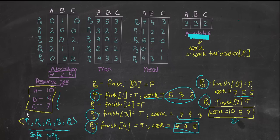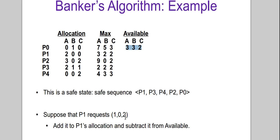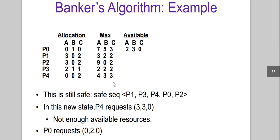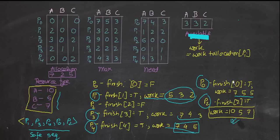After updating for P1's request of 1,0,2, we recompute the algorithm. It turns out there is still a safe sequence: P1, P3, P4, P0, P2. Since a safe sequence exists, the system is still in a safe state and P1's request is granted.